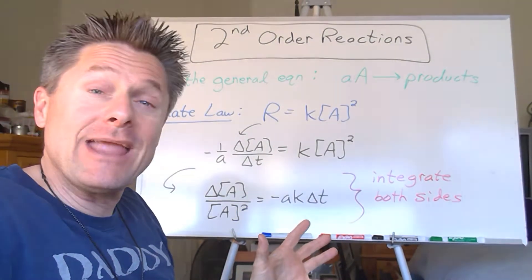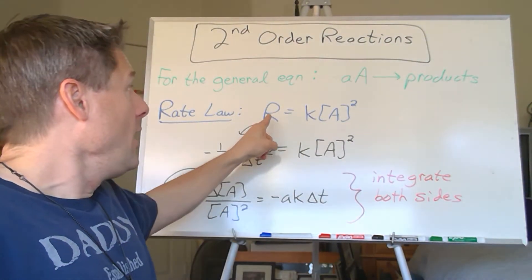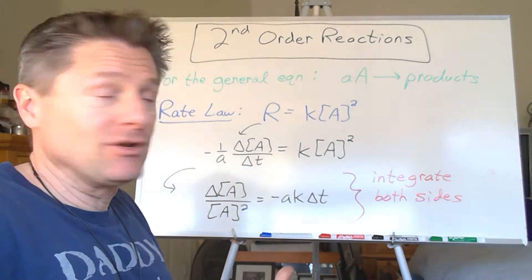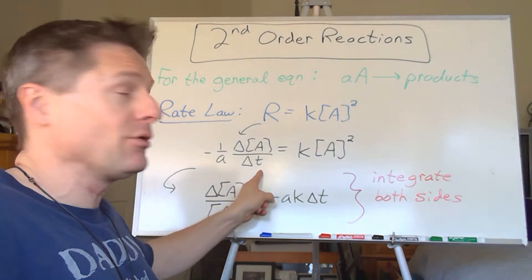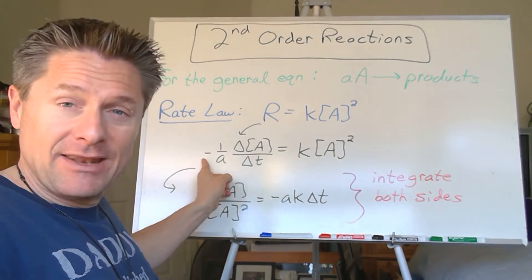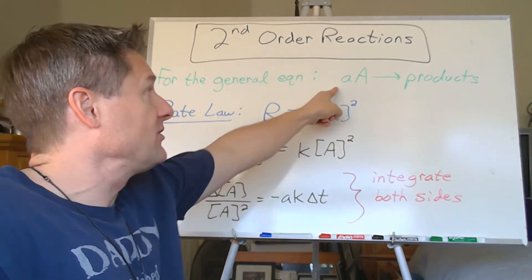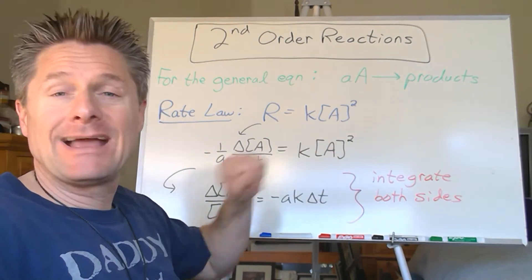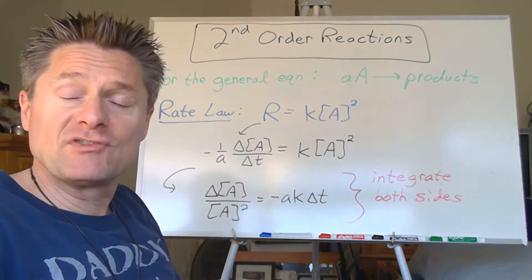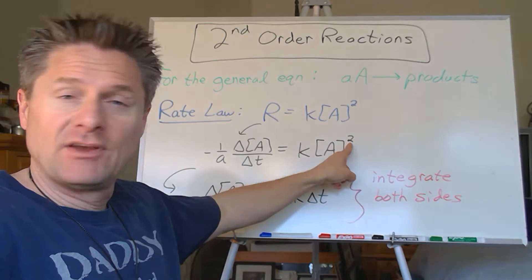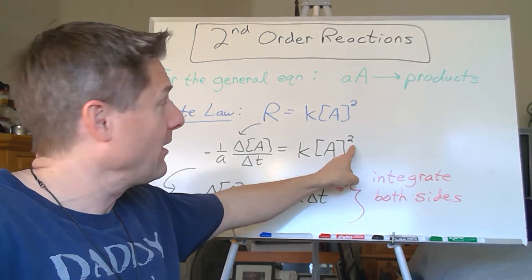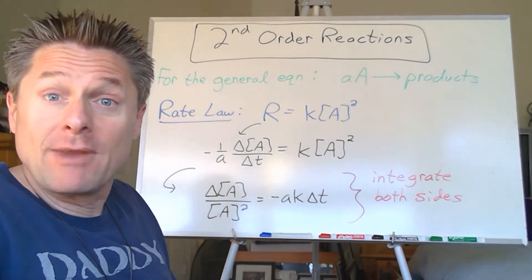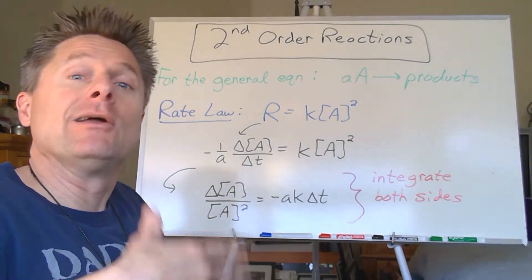That's what makes it a second order reaction. Just like we did before, take that rate and rewrite it in terms of the definition of a rate, which is the change in concentration over the change in time. But remember, it's a reactant, so you put a negative sign and one over the stoichiometric coefficient. That equals K times the concentration of A squared for second order. Zero order had a zero up there, first order had a one, and second order has two — that's the only difference. But it does change the overall integrated rate equation because the integral will be different.